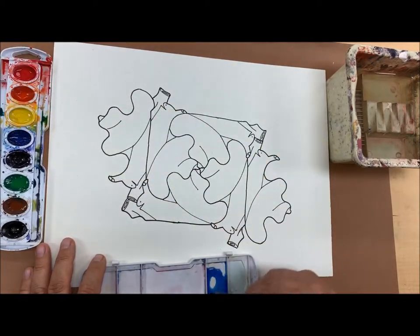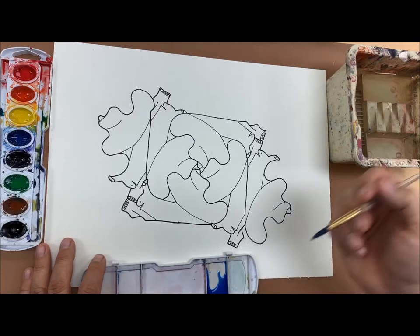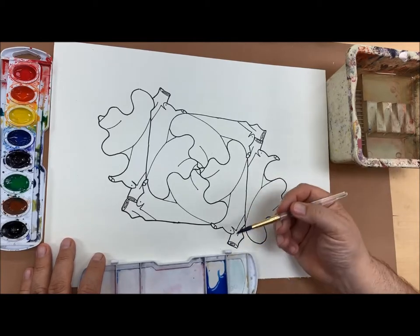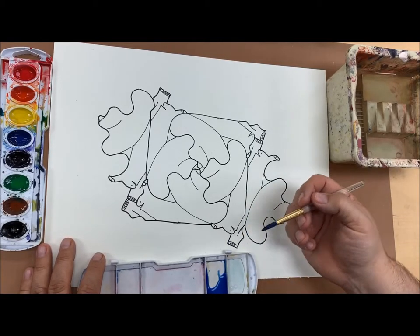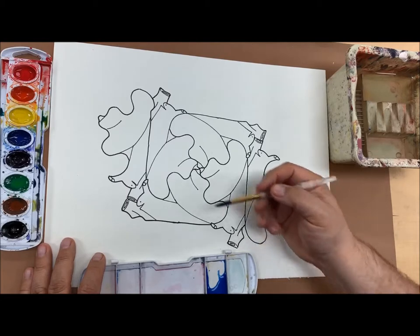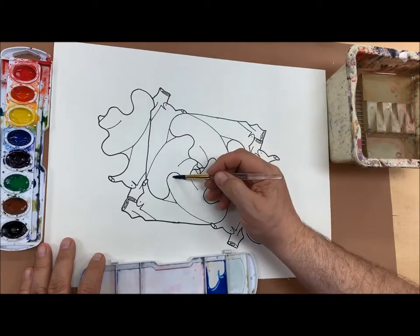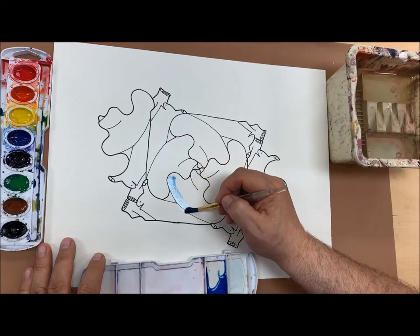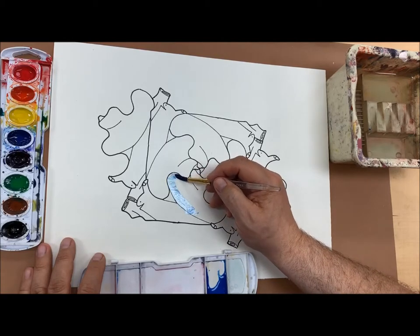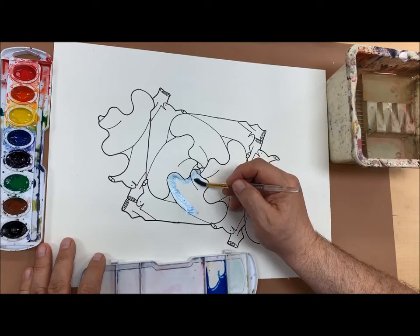Also with watercolors you start light. You don't want to go in like acrylics and just put in an intense color. With watercolors you can always get more intense but it's much more difficult to get light. So I'm going to go ahead and use blue and color in alternating shells.